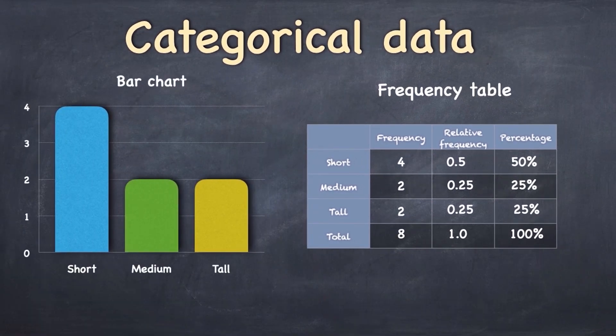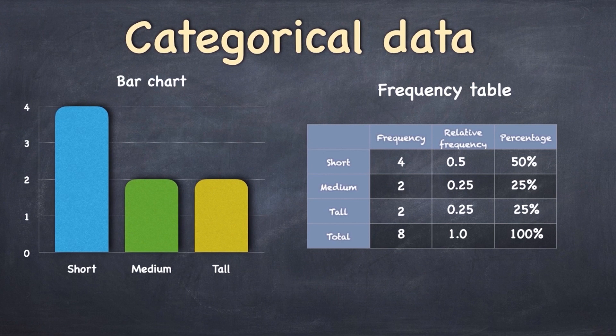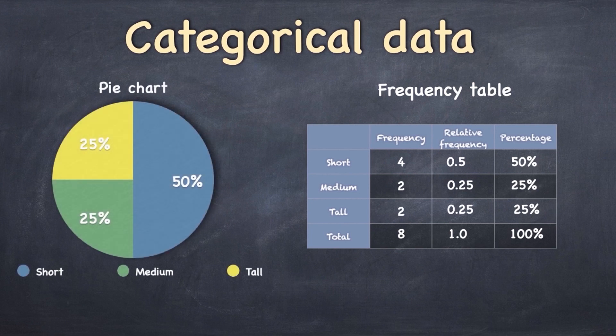We've got the percentage for each category. If we want to visualize this data, of course we can use a bar chart where the height of the bar is either the actual number of observations or the relative frequency or the percentage. An alternative is to use the pie chart.